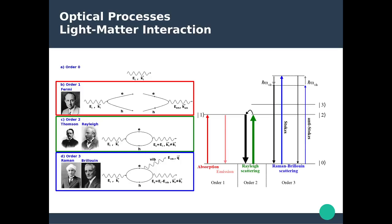If you study light-matter interaction on a very basic fundamental level, you can describe optical processes using quantum mechanics and in particular perturbation theory. At the zeroth order of the perturbation theory, you're basically describing only the propagation of a photon in free space, which has a certain energy and a certain momentum. The first order of this light-matter interaction has been described by Fermi — it's basically just the absorption of a photon, where a photon with certain energy and momentum is absorbed by matter, generating electron-hole pairs, with conservation of momentum and energy.